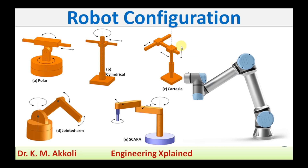Hello everyone, welcome to the session. In this session I am going to explain about robot configuration. There are five types of robot configuration: polar, cylindrical, cartesian, jointed arm, and SCARA. Any of these configurations we can use for a particular application.